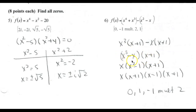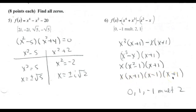You can still factor an x out of the first factor, giving x(x² - 1)(x + 1). But x² - 1 is a difference of squares, so it factors as (x + 1)(x - 1). You end up with four factors, and setting each equal to 0 gives zeros of 0, -1 (appearing twice), and 1.